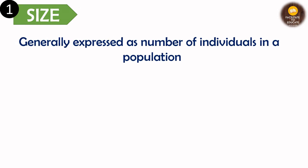The first one is the size of the population. It is generally expressed as the number of individuals of a population. Also, if the number of individuals are many and very small in size, they could be expressed in the form of biomass of that population. For example, phytoplanktons could be expressed as the biomass of the individuals.